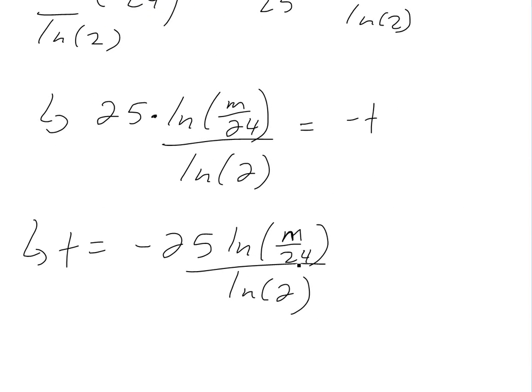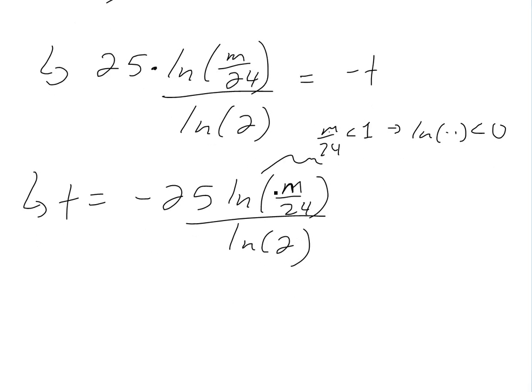The negative won't give us negative time because m/24 is less than one, and the ln function of a value less than one is negative. So we have negative times negative, which gives us a positive value.